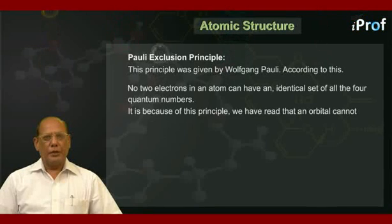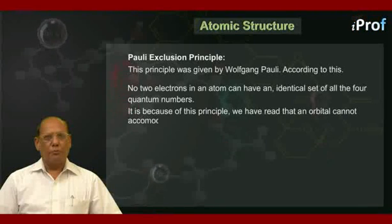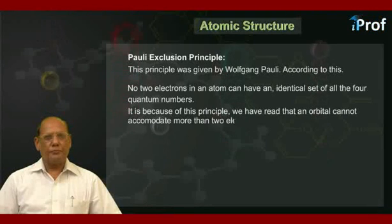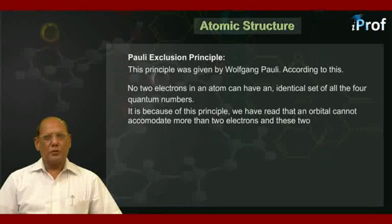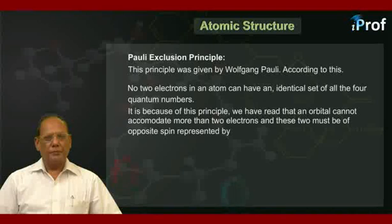It is because of this principle we have read that an orbital cannot accommodate more than two electrons, and these two must be of opposite spin, represented by two opposite arrows in a box.